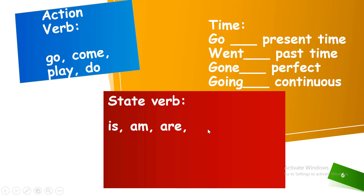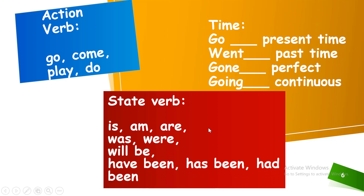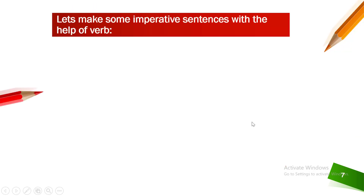State verbs include: Is, Am, Was, Were, Will Be, Have Been, Has Been, Had Been.